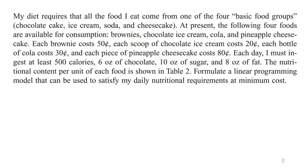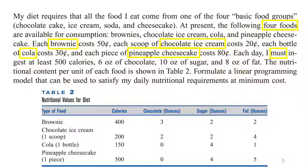In somebody's diet plan there are four foods available for consumption: brownie, chocolate ice cream, cola, and pineapple cheesecake. The example states that you must ingest at least 500 calories, 6 ounces of chocolate, and so on. The example also provides a table showing how many calories, chocolate, sugar, and fat are in each type of food.